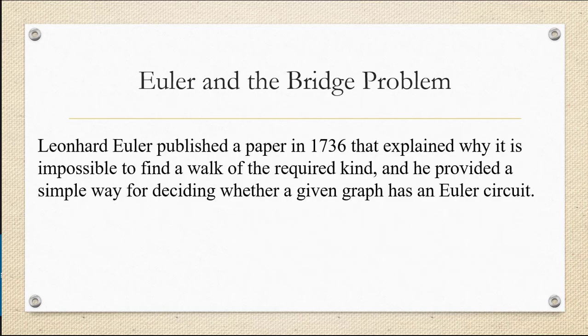Leonard Euler published a paper in 1736 that explained why it's actually impossible, and he provided a simple way for deciding whether any given graph has an Euler circuit.